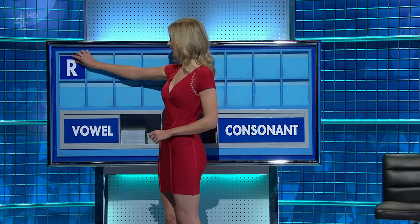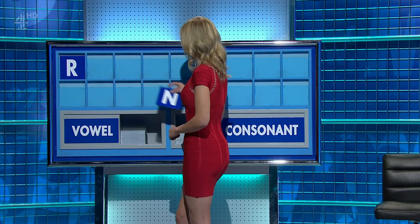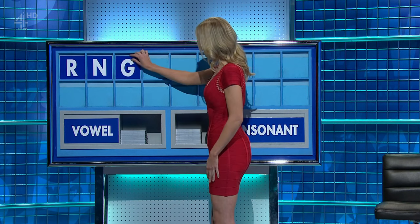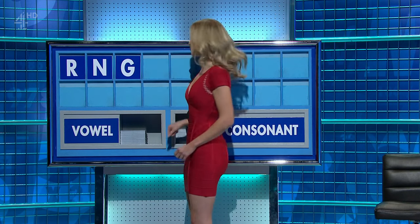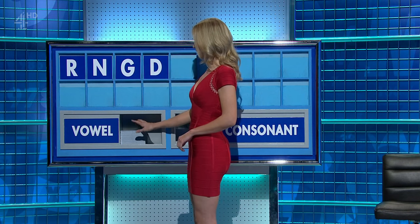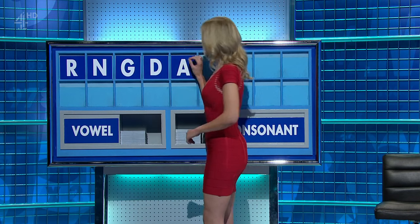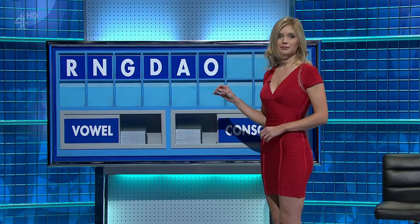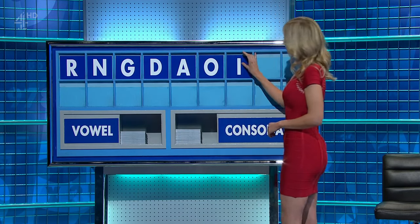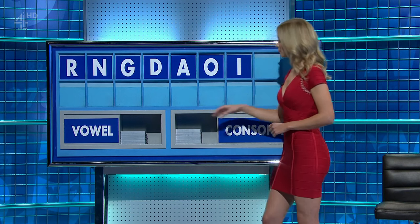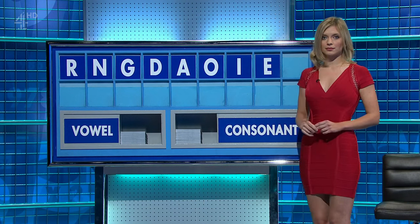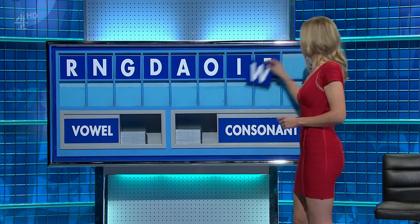Start with R. Consonant. N. Consonant. G. Another consonant, please. D. A vowel. A. And another. O. And another. I. And another, please. A. And a consonant, please. And lastly, W. Thank you, comrade.